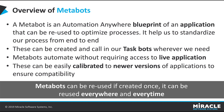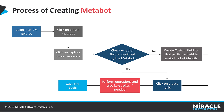Now let us see how to create a MetaBot in IBM RPA. First, log in to IBM RPA and click on Create MetaBot. In MetaBot, we have two fields: assets and logic. In assets, we capture the screen; in logic, we write the logic for the captured screen. After clicking capture screen in assets, we check whether the field is identified by the MetaBot or not. Then we click on Create Logic and perform operations like set text, get text, or passing keystrokes, then save the logic.